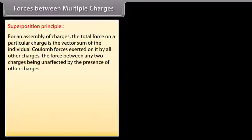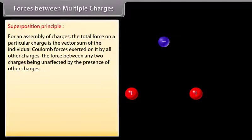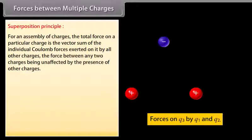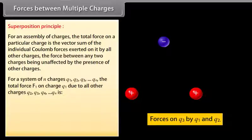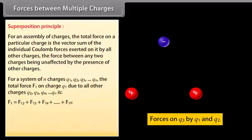Forces between multiple charges — Superposition principle: For an assembly of charges, the total force on a particular charge is the vector sum of the individual Coulomb forces exerted on it by all other charges, the force between any two charges being unaffected by the presence of other charges. For a system of n charges q₁, q₂, q₃, … qₙ, the total force F₁ on charge q₁ due to all other charges is F₁ = F₁₂ + F₁₃ + F₁₄ + … + F₁ₙ.